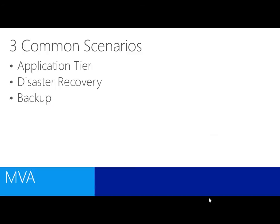There are three common scenarios we're seeing at Microsoft that allow people to use the cloud. First, they might use it as an application tier. Think about a traditional web application — it has a web front end, a middle tier for communication and business rules, and a back end for storage like SQL or Oracle. One common hybrid scenario is: I don't want to stand up 100 web servers, so I'll keep the data on-premise but use Azure as my application tier for my web front end. Or alternatively, use Azure as the SQL backend for my application. Azure can provide just one tier, not necessarily the entire stack.